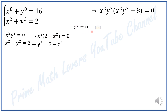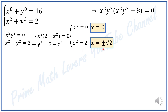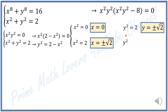Again two factors equal zero: either x² equals 0, meaning x equals 0, or 2 minus x² equals 0, meaning x² equals 2, so x equals plus or minus square root of 2. If x equals 0, then y² equals 2, so y equals plus or minus square root of 2. If x² equals 2, then 2 minus 2 equals 0, so y² equals 0, meaning y equals 0.